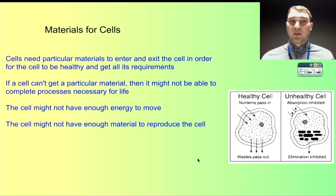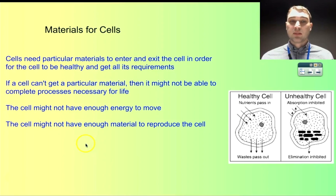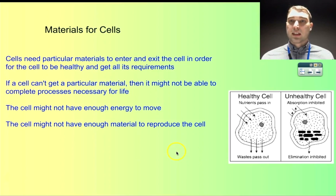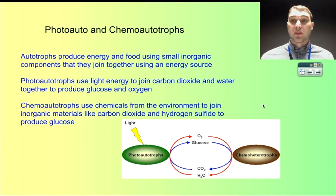Cells need material to do their job. They need particular materials to be healthy, and if they don't get those materials inside them, they can be quite unhealthy. Depending on the type of cell, it might need to take in an energy source like glucose, or it might produce its own glucose and then break that down. It also needs to get rid of waste materials. If you can't get materials into the cell, you might not be able to reproduce, because to make new cells you need new materials — proteins, lipids, and so on. Cells need to get materials in but also need to remove wastes. We're going to look at the difference between autotrophs and heterotrophs in terms of how they get their energy and materials.